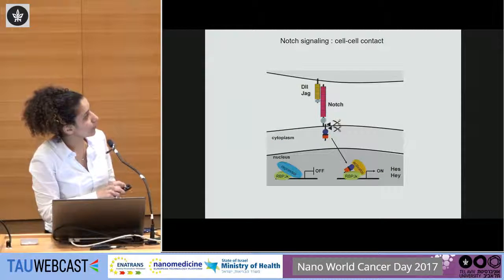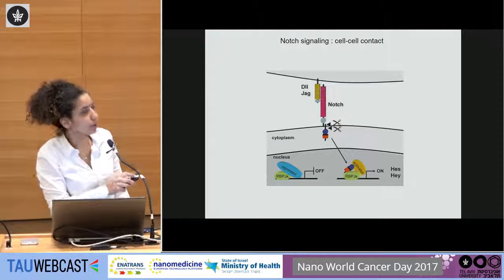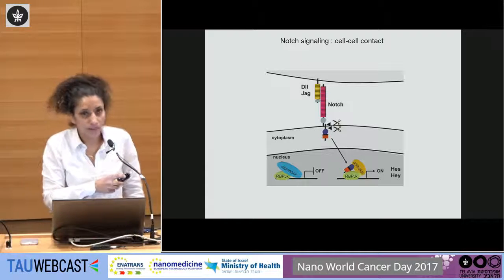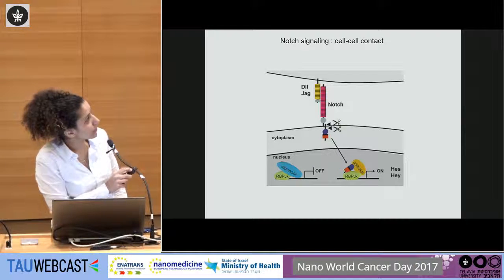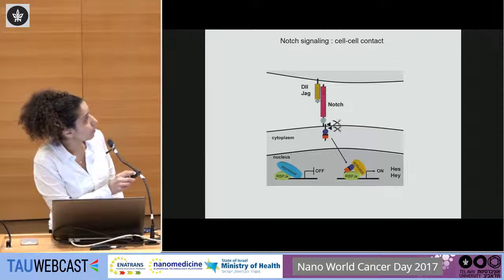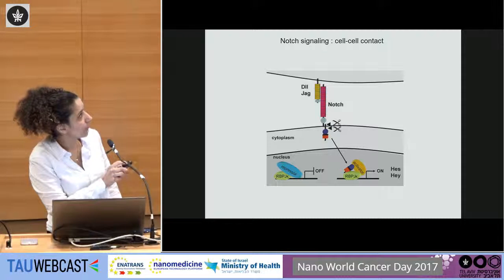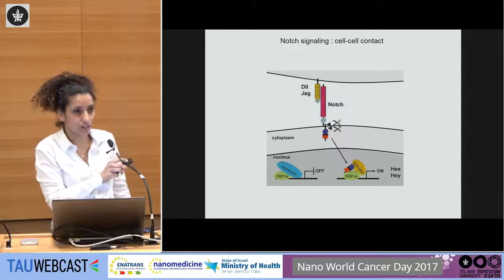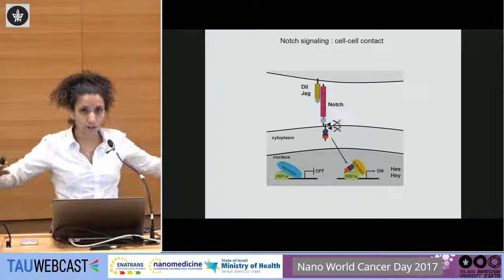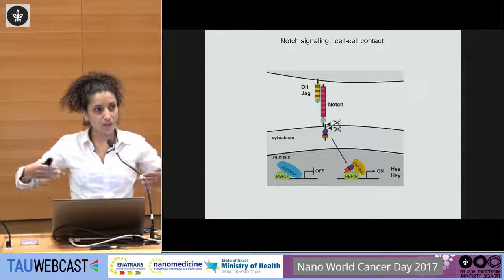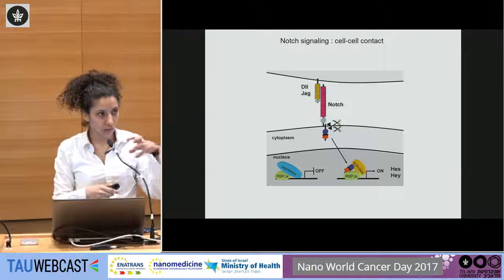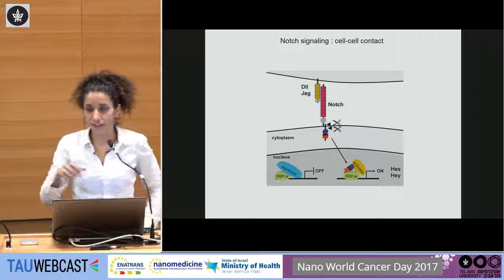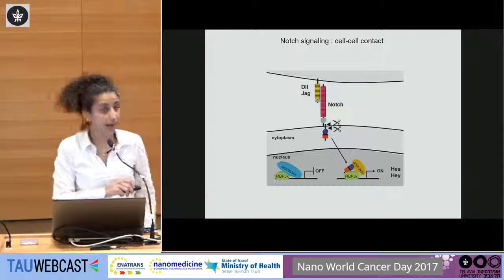After a lot of controls, we decided to focus on Notch signaling. Notch signaling is a known signaling pathway which involves cell-cell contact. You need one cell expressing the ligand and another cell expressing the receptor. Only when there is a physical interaction between the two — receptor and ligand — is the signaling switched on.